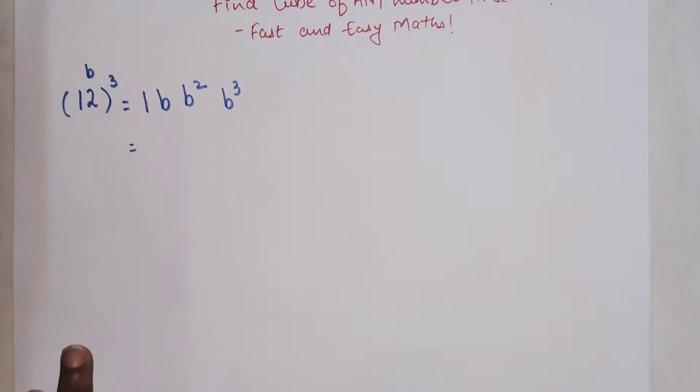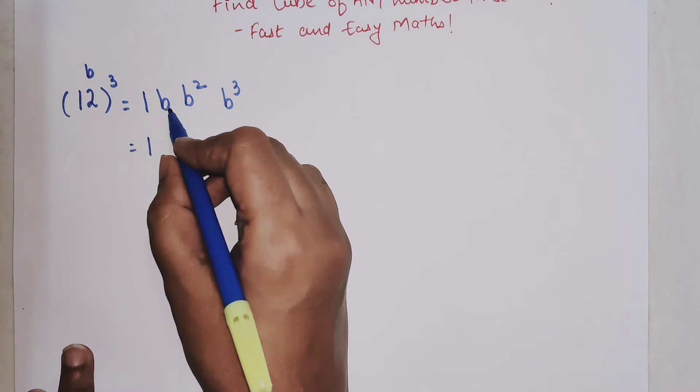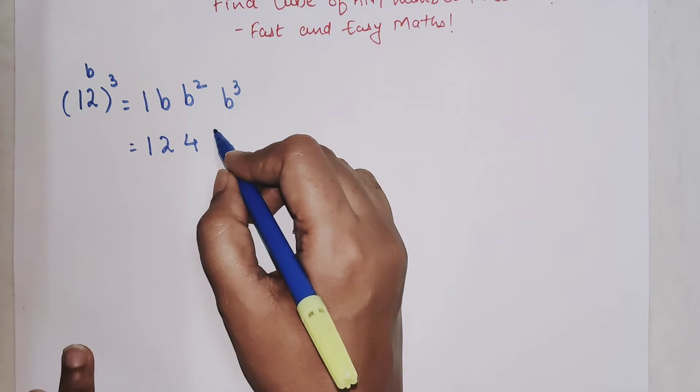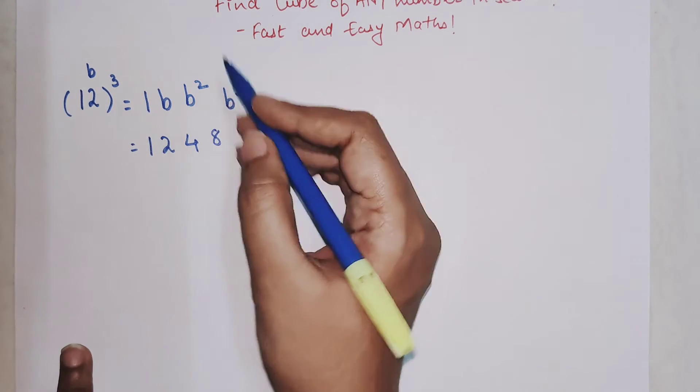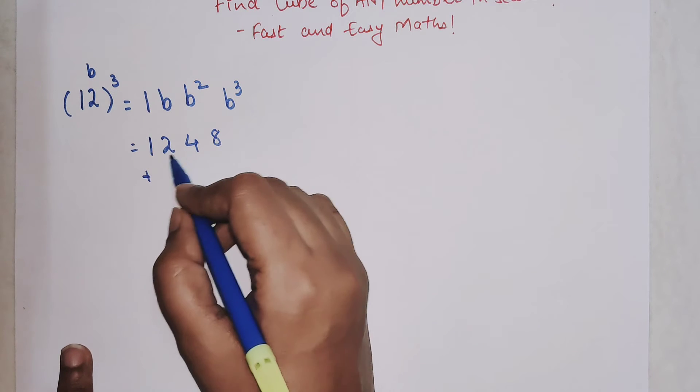So two, two square will be four, and two cube will be eight. And after this there is just one small step where you have to double these two middle numbers.